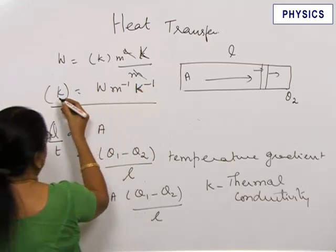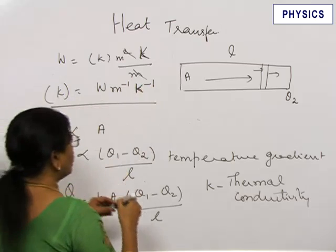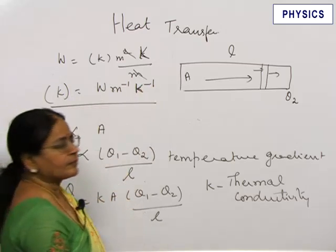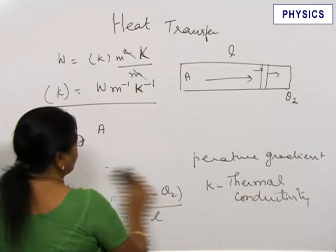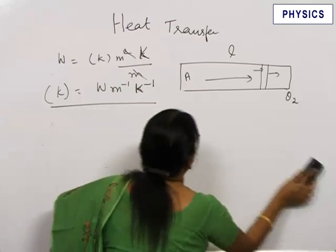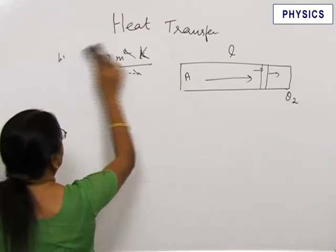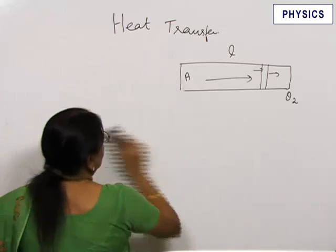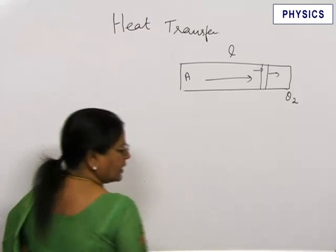The unit of thermal conductivity K is watts per meter per Kelvin. Different metals have different thermal conductivity. Metals are good conductors of heat. So the main mode of transfer of heat in a metallic rod is by conduction.